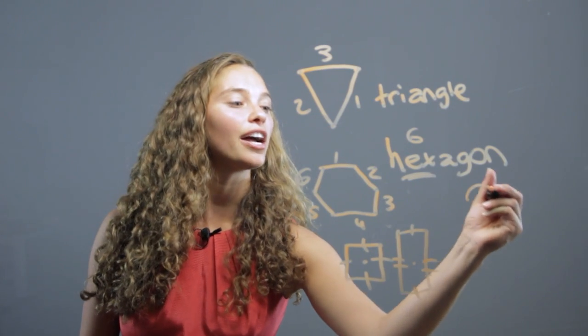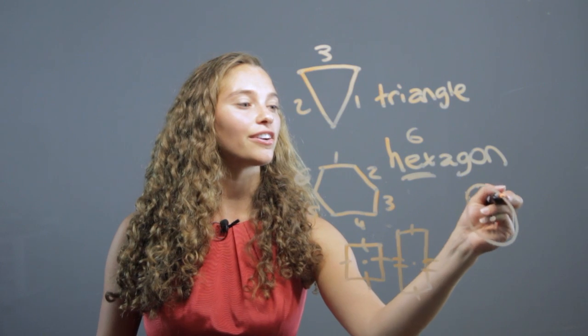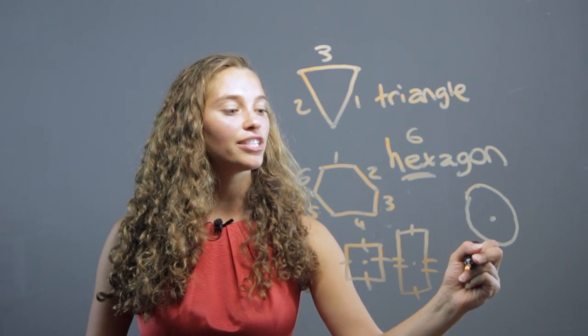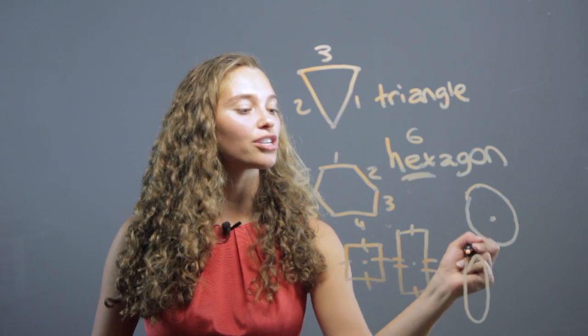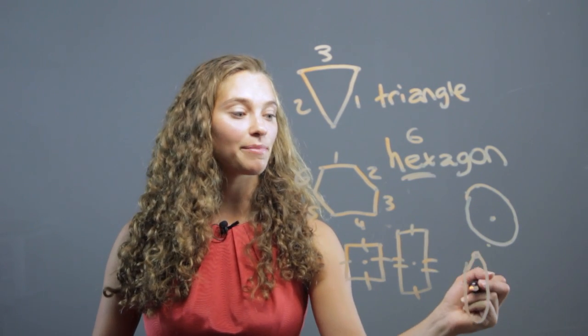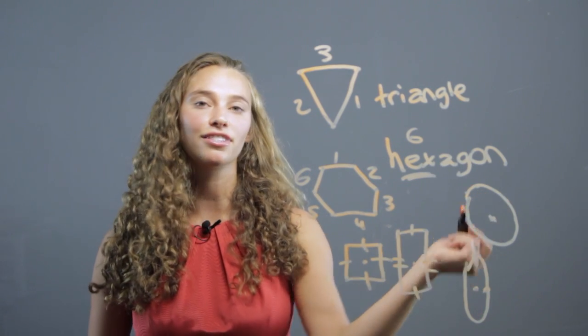It's the same for a circle, where every point in the circle is equidistant from the center point, and it makes a full round shape. Versus an oval, which is also a round shape, but this point up here is further from the center than this point. So not all the points are equidistant, like in a circle.